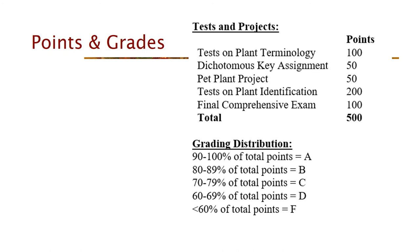Total points in the class: 500. I'll use the normal grading distribution — 90, 80, 70, 60 for A, B, C, D — and less than 60 to fail the class. Let's hope that doesn't happen! That's how things are laid out.